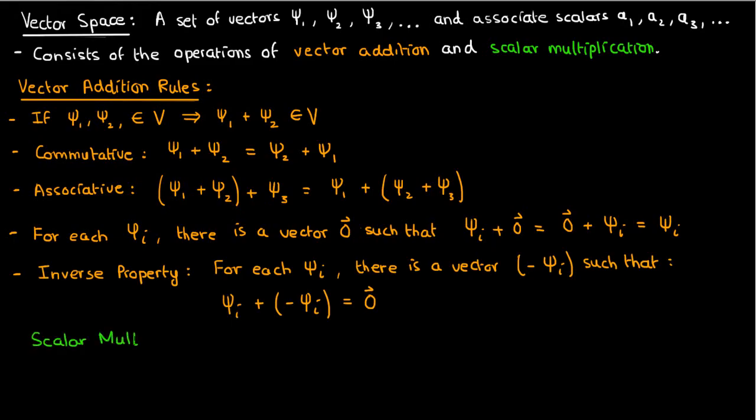For scalar multiplication we've got four more properties. The first one is that the vector field must be closed under scalar multiplication. So if psi1 is in V and a1 is a scalar, then a1 times psi1 is also in V.